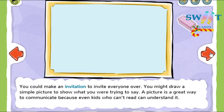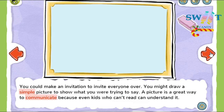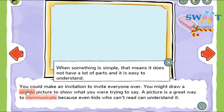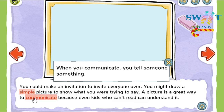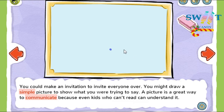You could make an invitation to invite everyone over. You might draw a simple picture to show what you were trying to say. A picture is a great way to communicate because even kids who can't read can understand it. When something is simple, that means it does not have a lot of parts and it's easy to understand.